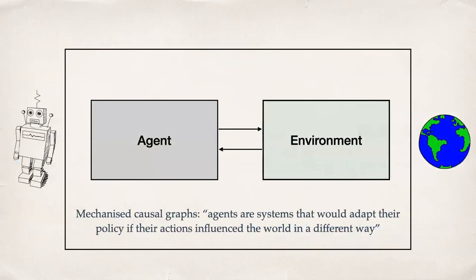A quote from their paper summarizes it well: agents are systems that would adapt their policy if their actions influenced the world in a different way. If a system knew its actions would have a different effect on the world than expected, and it changes its decision-making process after receiving that information, that adaptability is the factor that tells us we are dealing with an agent. If they cannot change, they are not agents.